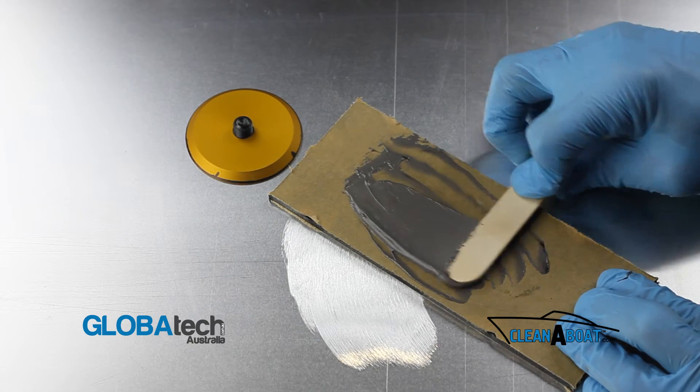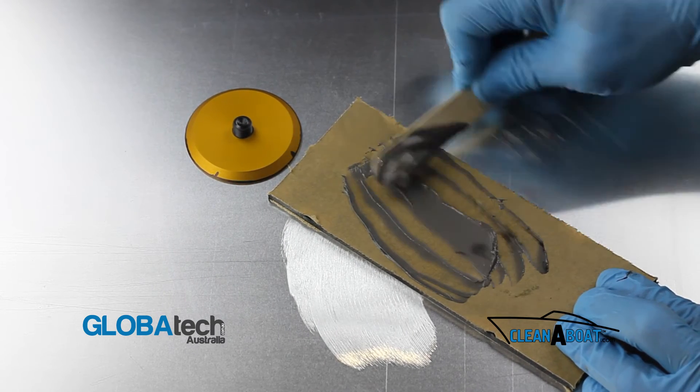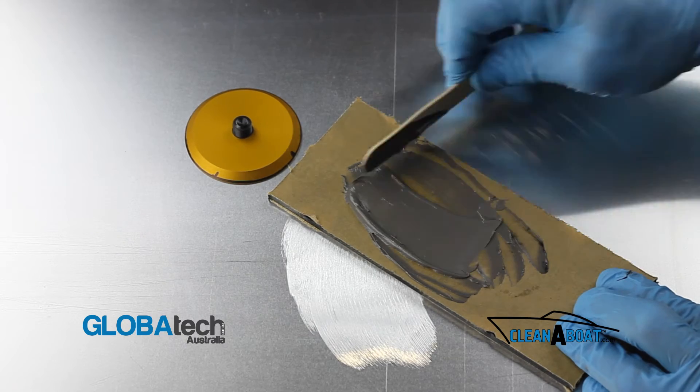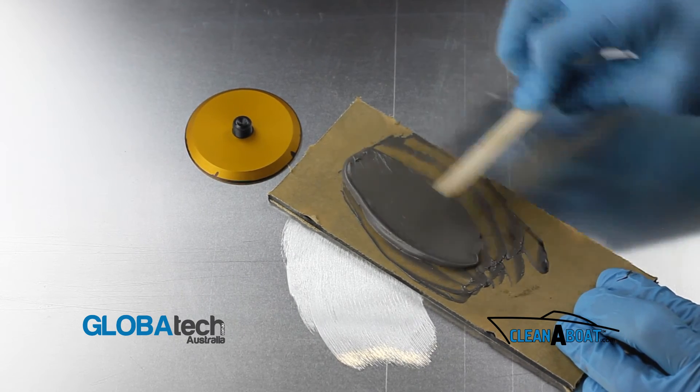When mixing JB Weld, it's important you work all the air out of it and mix it to a uniform dark grey color.